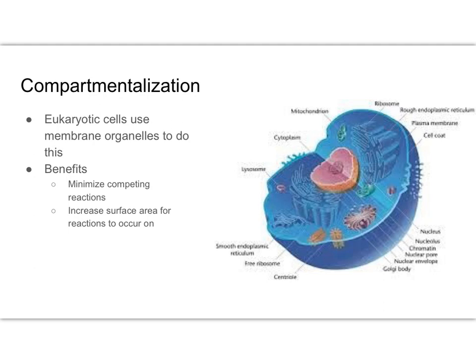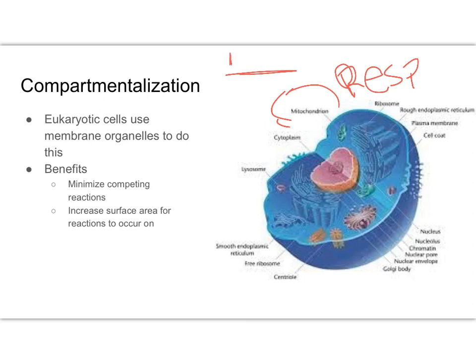A good example is the mitochondria, where cellular respiration occurs. That cellular respiration is compartmentalized within the mitochondria, which has an inner membrane that helps increase surface area. To do cellular respiration, the mitochondria needs to create a gradient — building up lots of hydrogen ions on one side of the membrane — and it cannot do that if it is not enclosed. That enclosure is an important part of compartmentalization in the mitochondria.